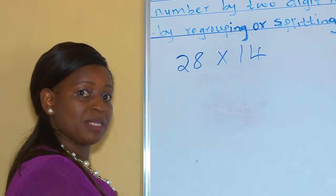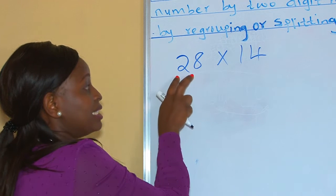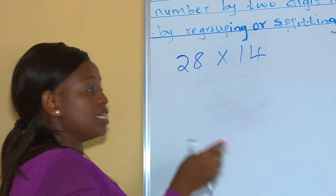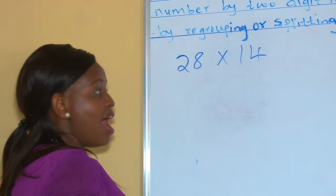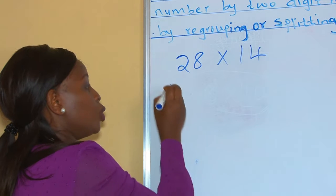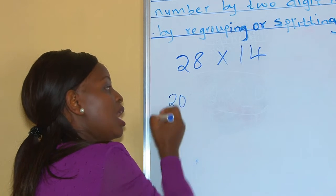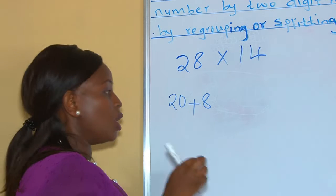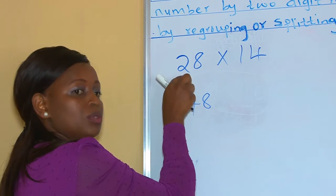What helps us to regroup them is the place value. If you look at number 28, there are two place values — that is 1s and 10s. How many 10s are in 28? There are two 10s. So 2 times 10 is 20, and our 1s which is 8. When you add 20 plus 8, you get 28.